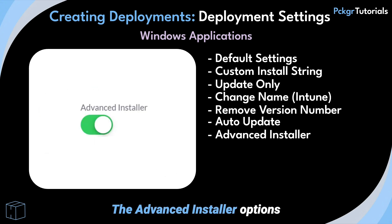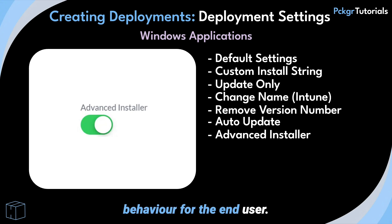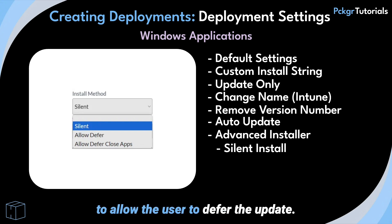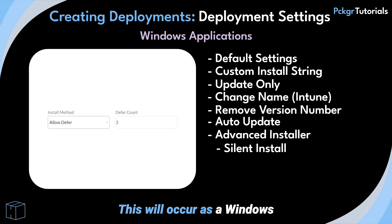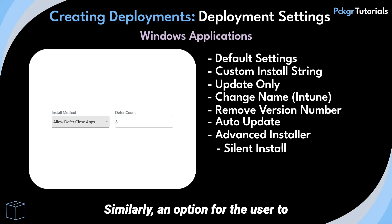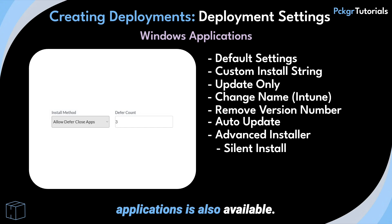The advanced installer options allow changes to the install behavior for the end user. By default, the updates will occur silently; however, there is an option to allow the user to defer the update. This will occur as a Windows pop-up notification, and the number of allowed defers can be determined in this section. Similarly, an option for the user to defer the update and close specific applications is also available.